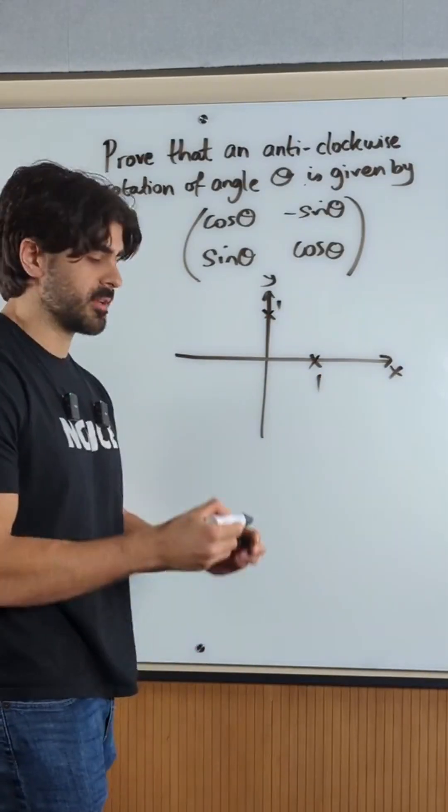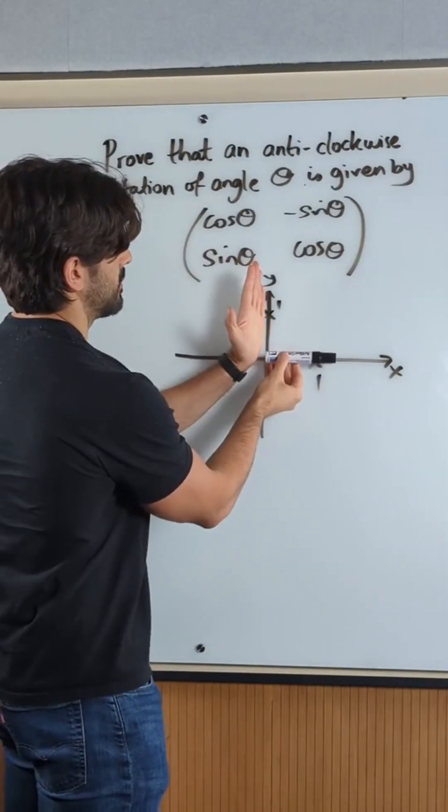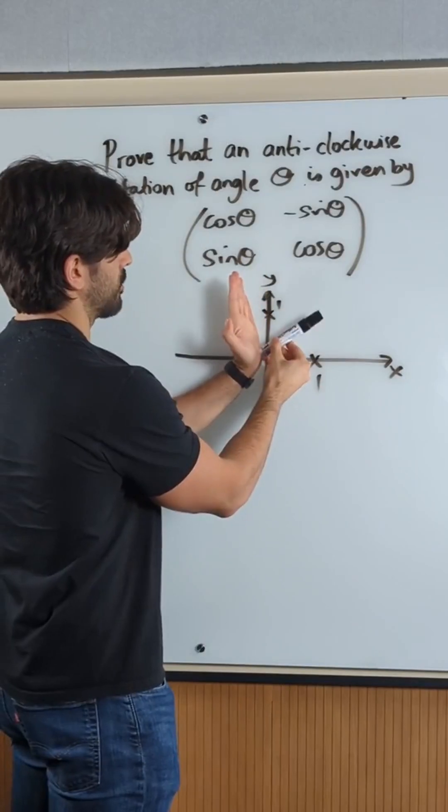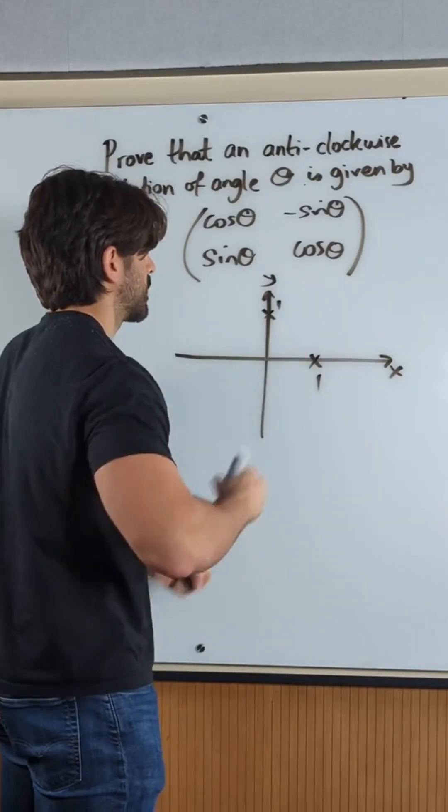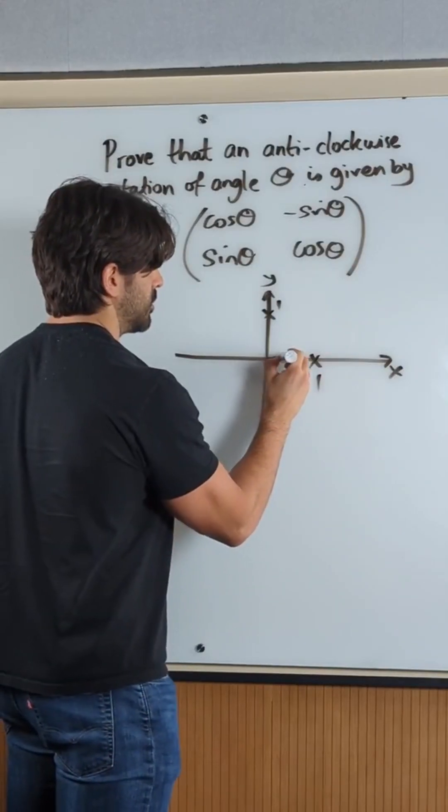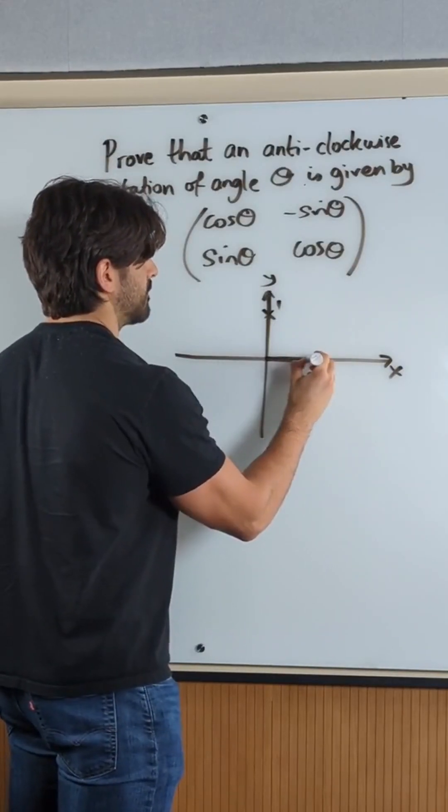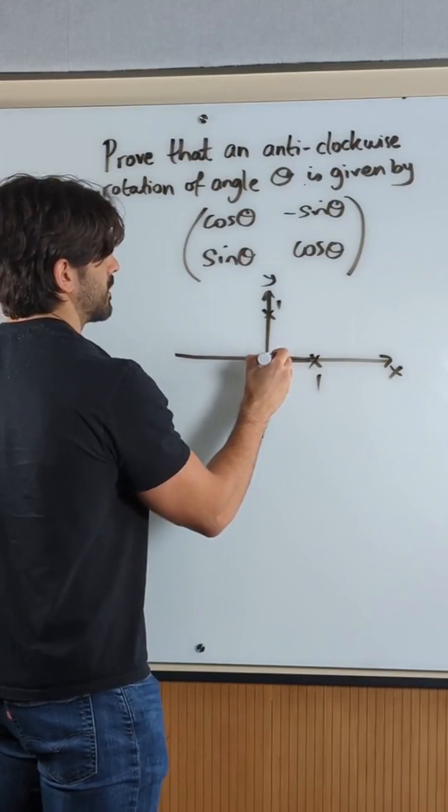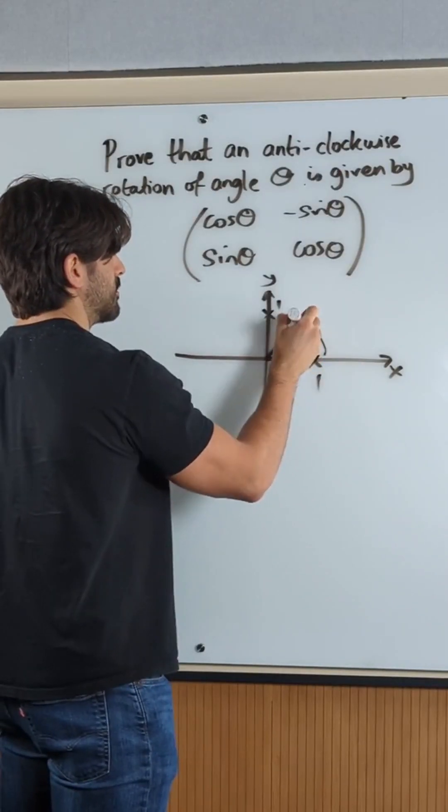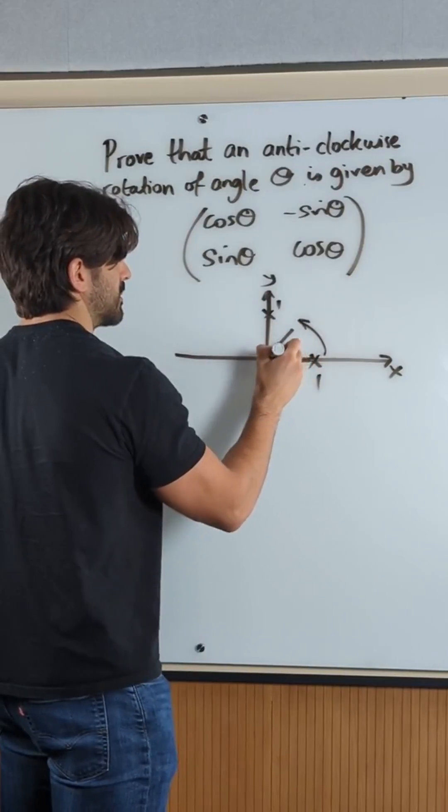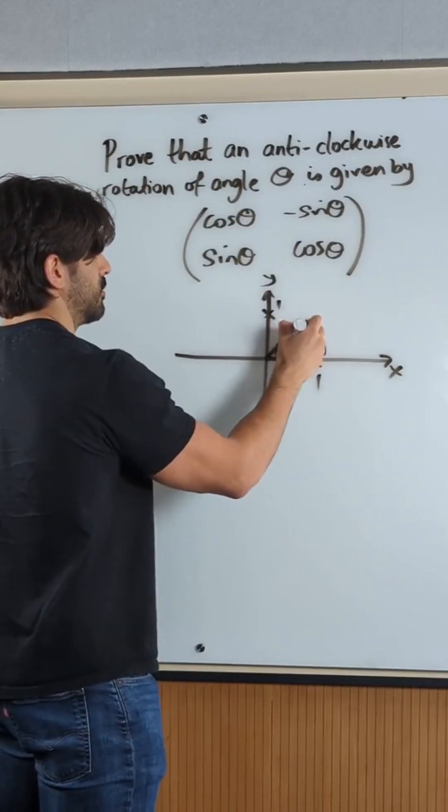Now what are we doing? We are rotating these points anti-clockwise, theta degrees. So this line, the unit vector, think of it as a vector, we are rotating it theta degrees this way. So it's rotating round, theta degrees, like that, to here.